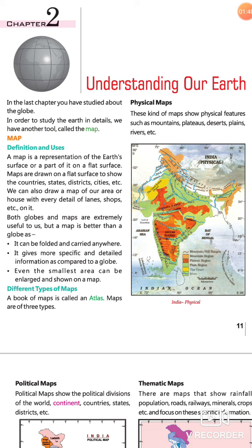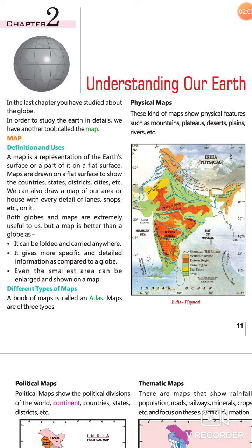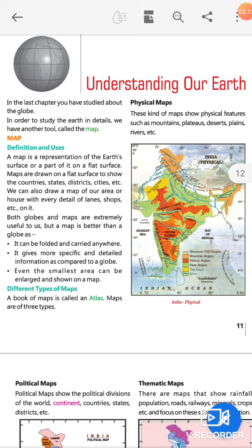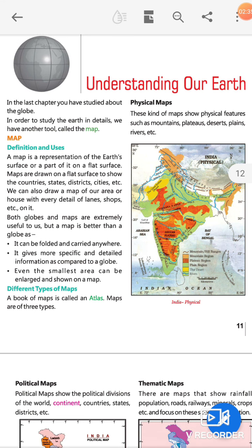In the map we can draw our area, house, and lands. We can also show which shop is where on the map. Maps are extremely useful to us, but a map is better than the globe. First point: it can be folded and carried anywhere. Second: it gives more specific and detailed information as compared to the globe.